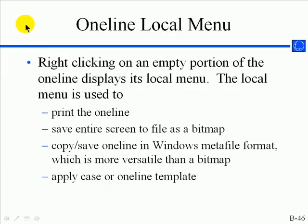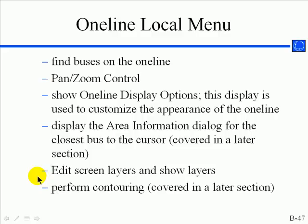Next, we will explore the one-line local menu, accessed by right-clicking on an empty portion of the one-line display. Right-clicking on an object brings up a local menu pertinent to that object, while right-clicking on a blank portion accesses the one-line local menu. Options available include printing the one-line, exporting the screen to bitmap or JPEG, saving to other formats, applying one-line templates, finding buses on the one-line, panning and zooming controls, displaying other dialogs, screen layers, contouring, and difference flows.